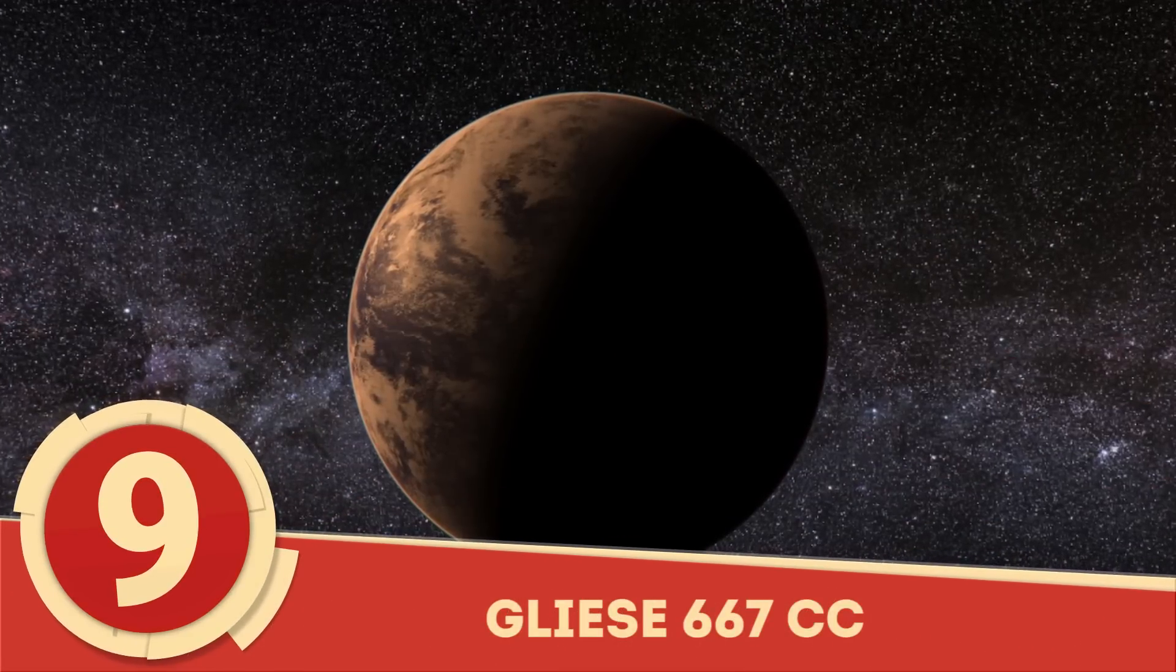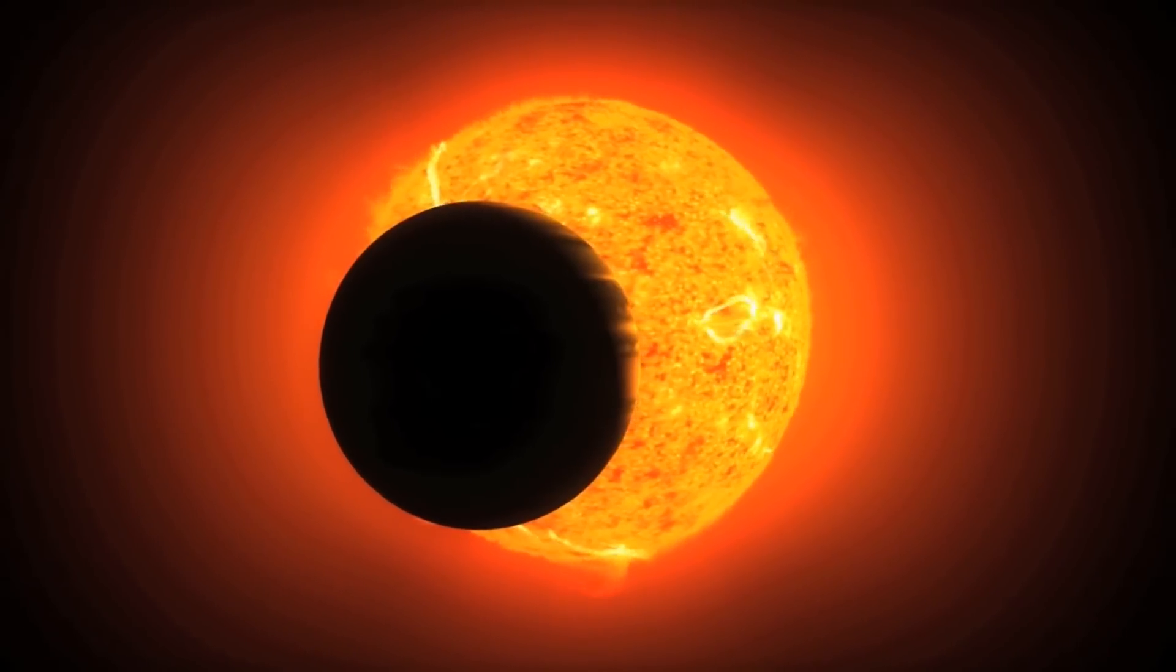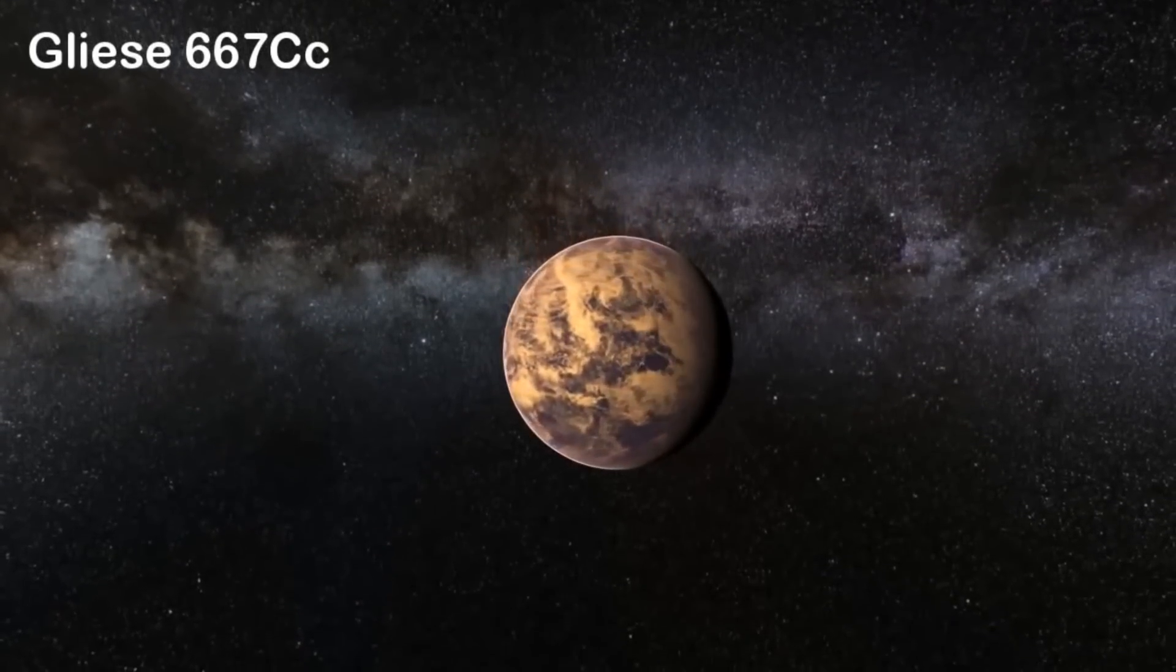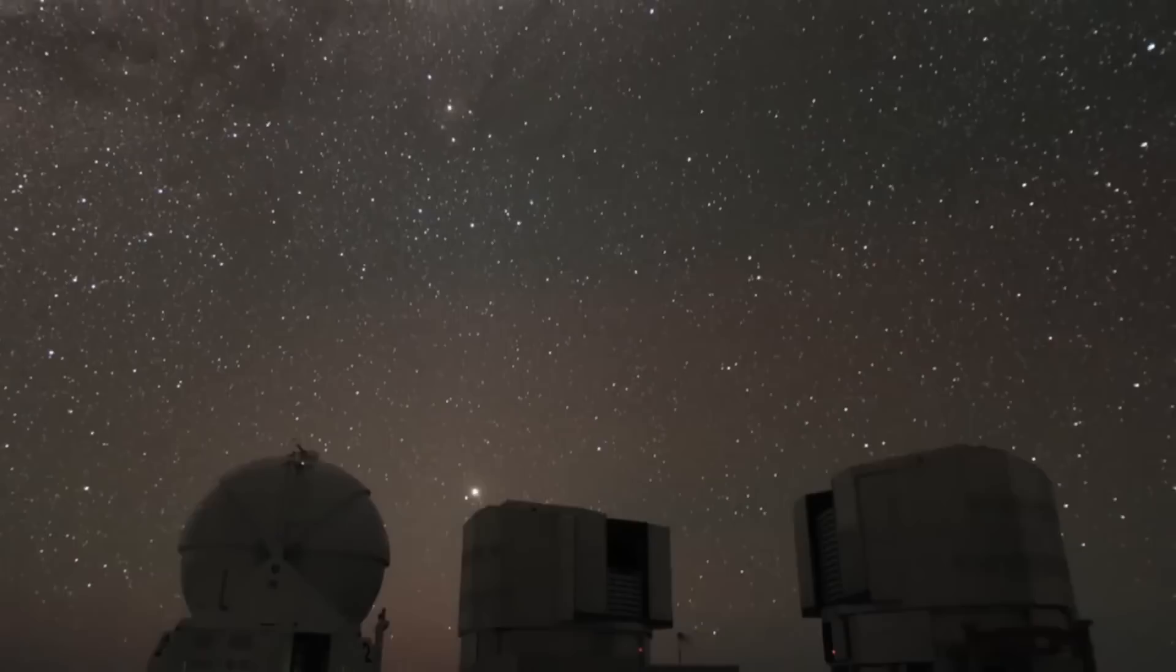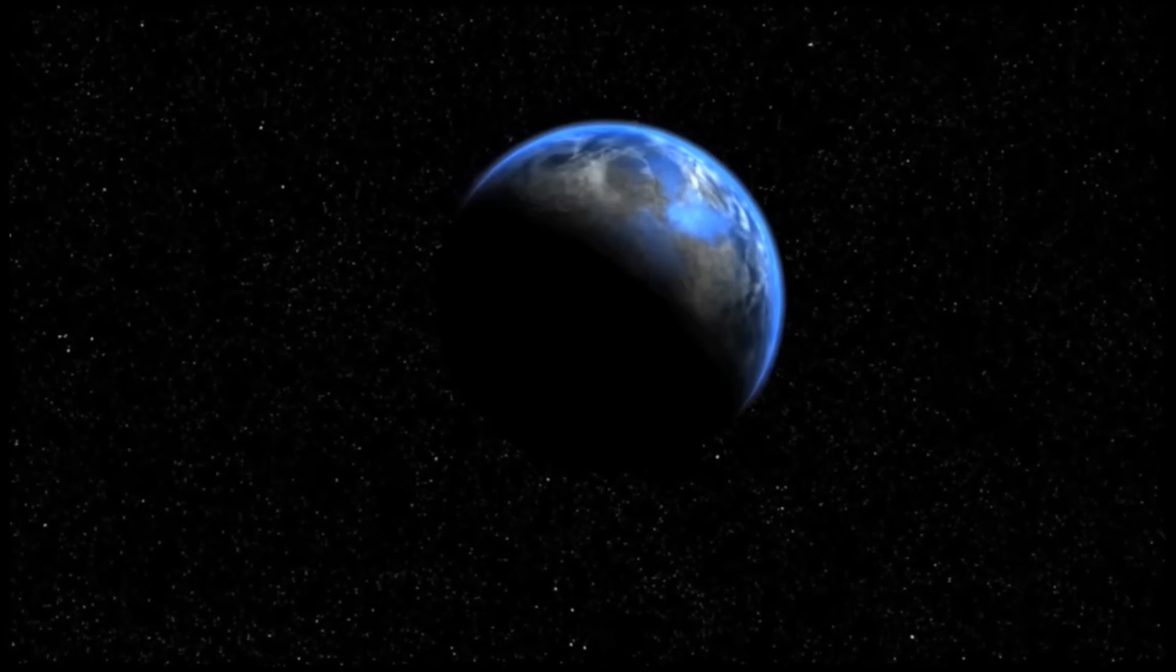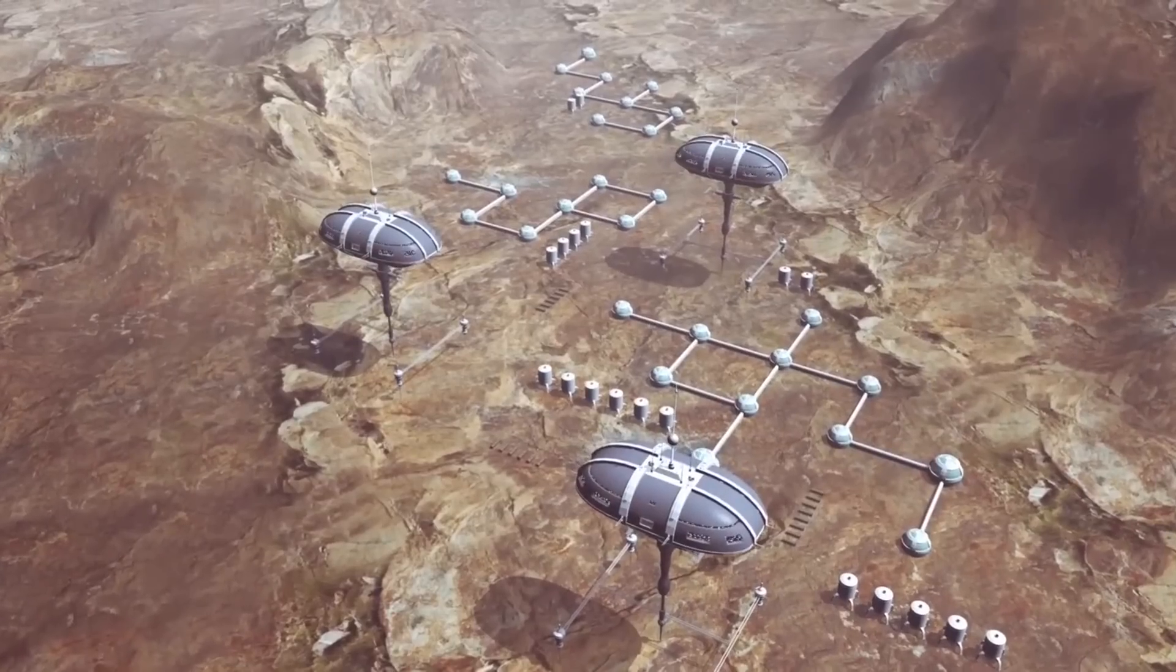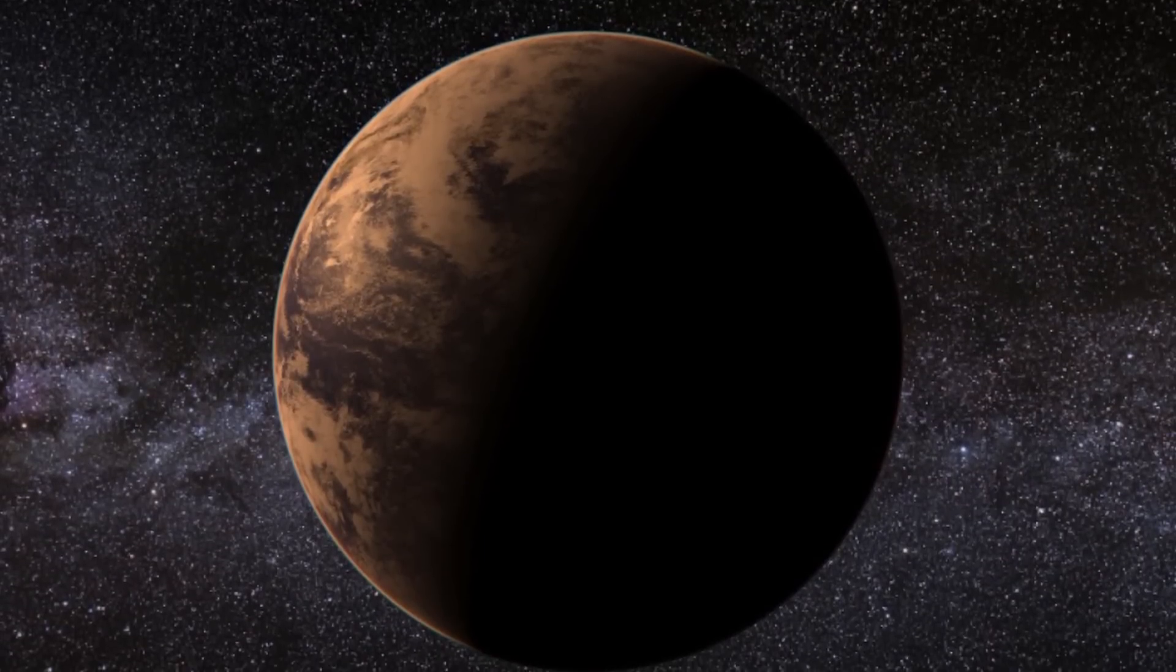Number 9: Gliese 667cc. Orbiting around the red dwarf star Gliese 667c, some 23 light years away, the exoplanet Gliese 667cc is within the habitable zone and has an ESI of 0.84. In November of 2011, astronomers noticed the super-Earth and started to find similarities to our own planet. The habitability of Gliese 667cc depends on where you're aiming to terraform, as the two hemispheres display complete opposite properties.